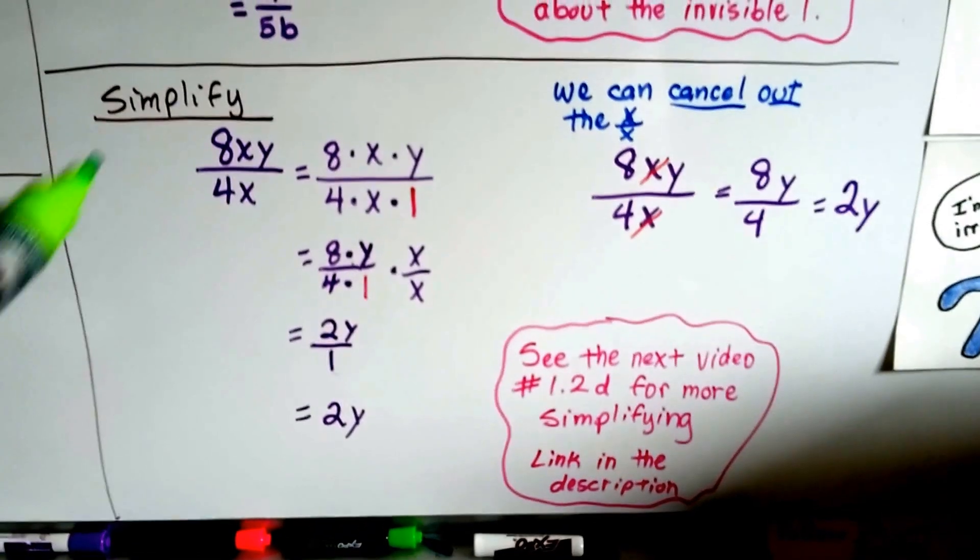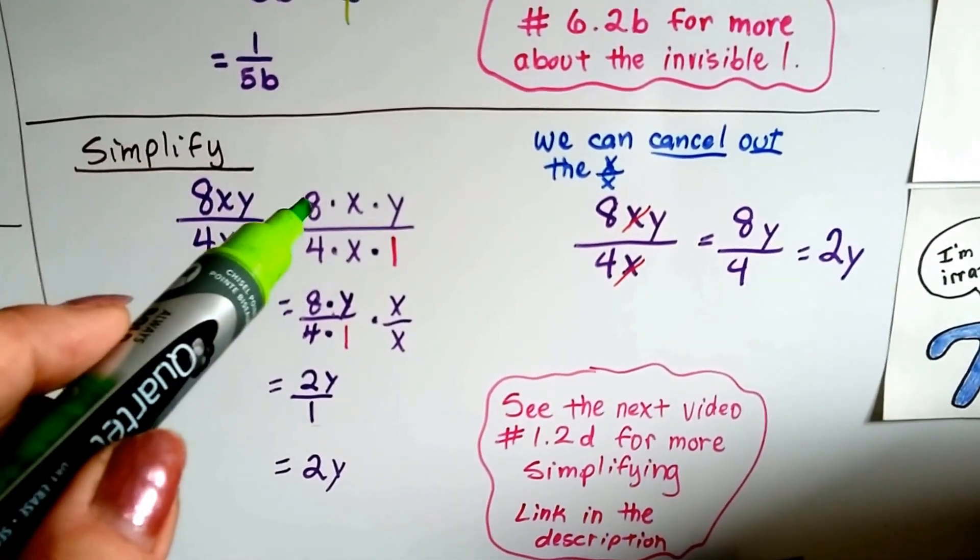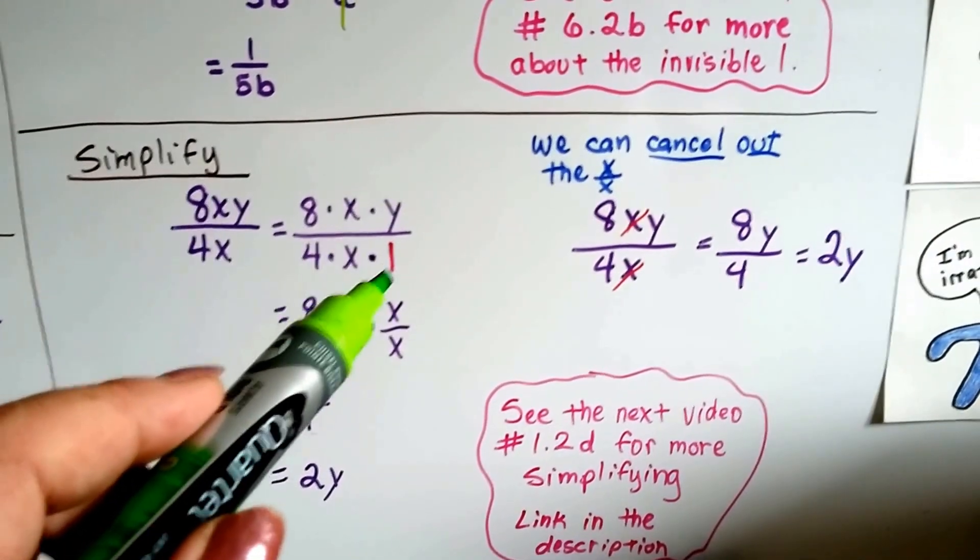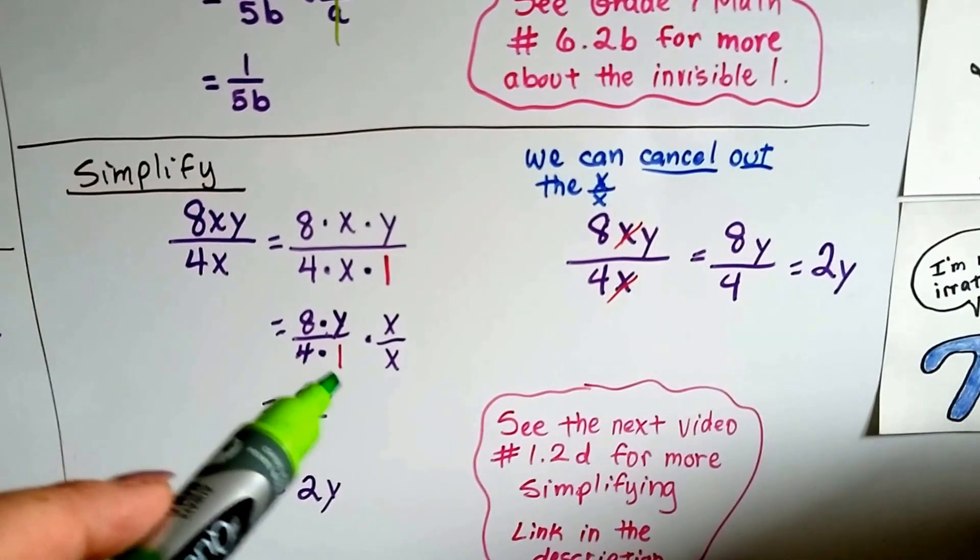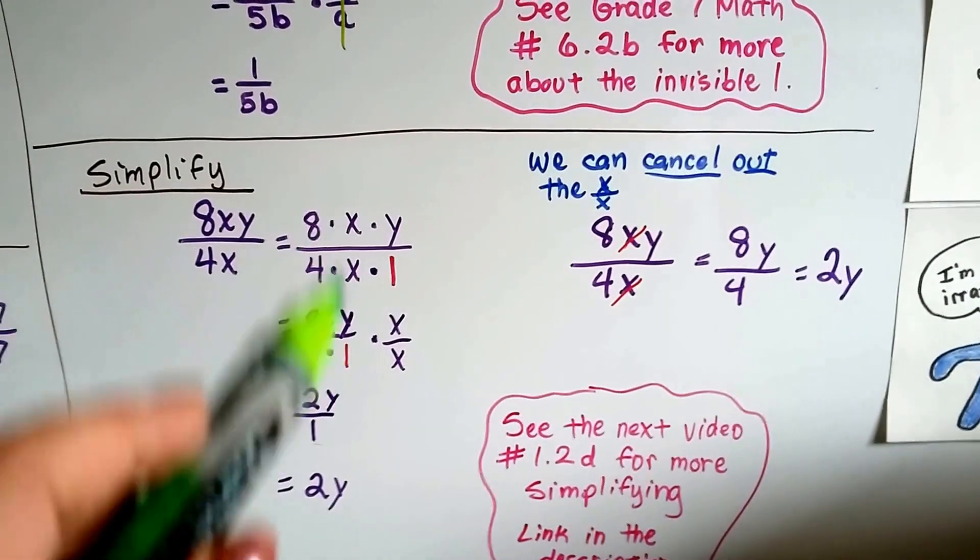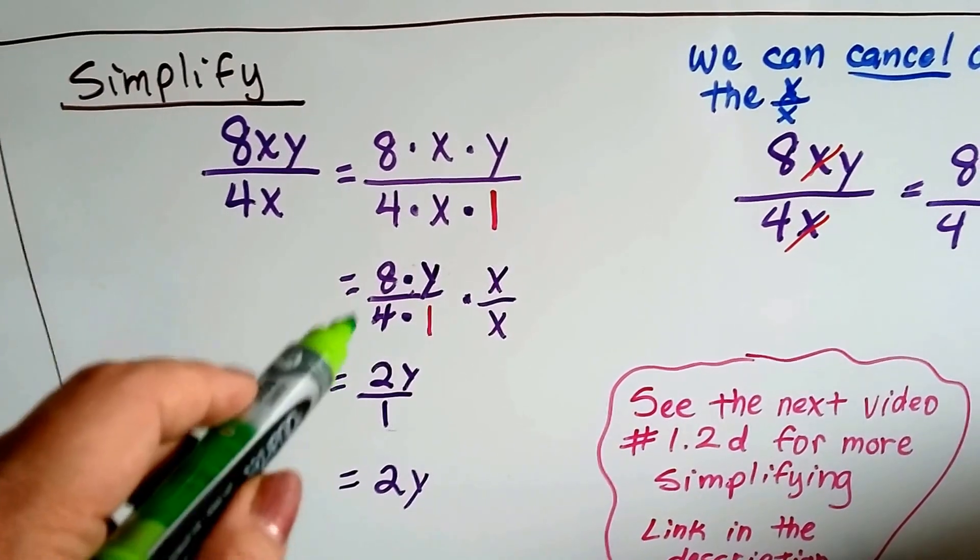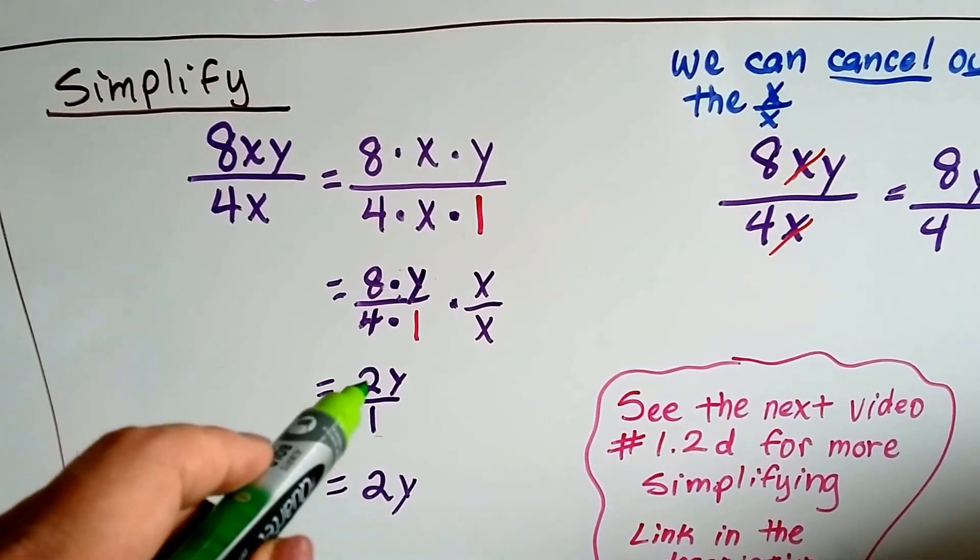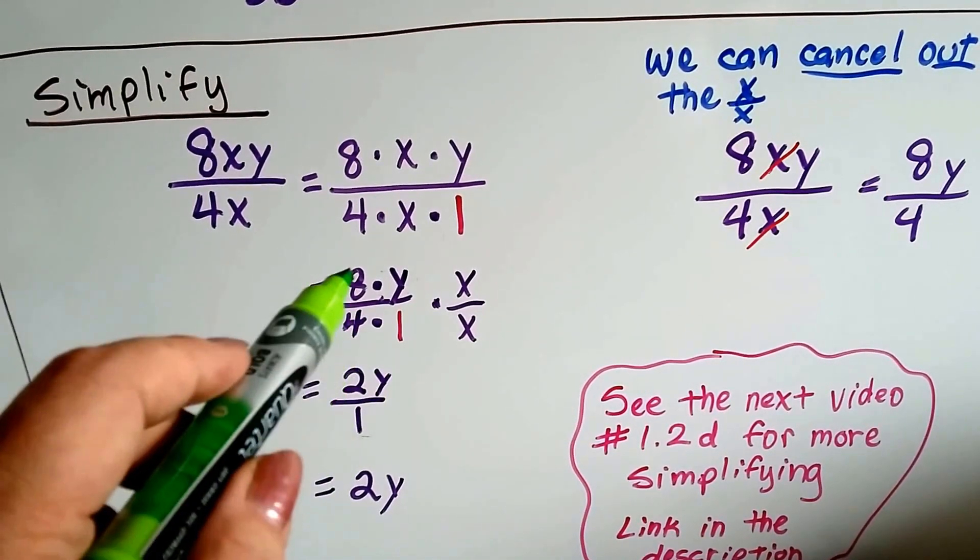Alright, now, if we have 8xy over 4x, that's 8 times x times y over 4 times x times 1. So, that's like 8 times y over 4 times 1, and we pull the x's out. Now, we end up reducing it. 4 goes into 8 2 times. So, it's like saying 2 over 1.